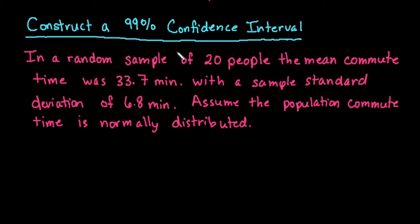Hi, in this video we are going to construct a 99% confidence interval. For this situation we have a random sample of 20 people with a mean commute time of 33.7 minutes and a sample standard deviation of 6.8 minutes. Assume the population commute time is normally distributed.